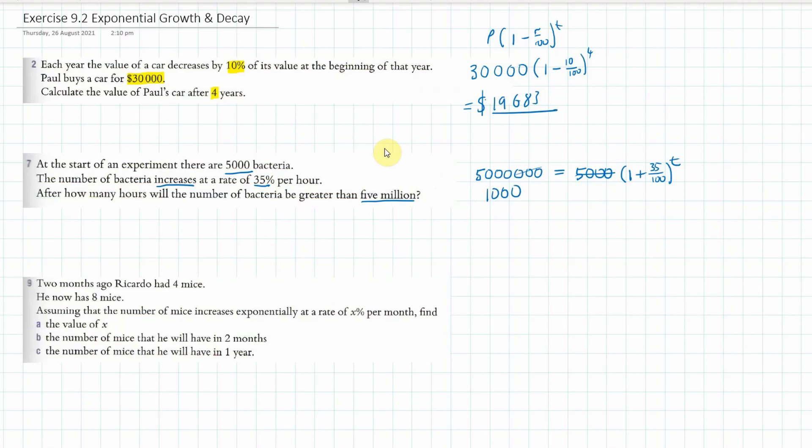Okay, now that is going to be equal to 1.35 to the power of t. Now the problem is we don't know what t is, so what we can do at this point is we can use trial and error if we want or we can use logs.